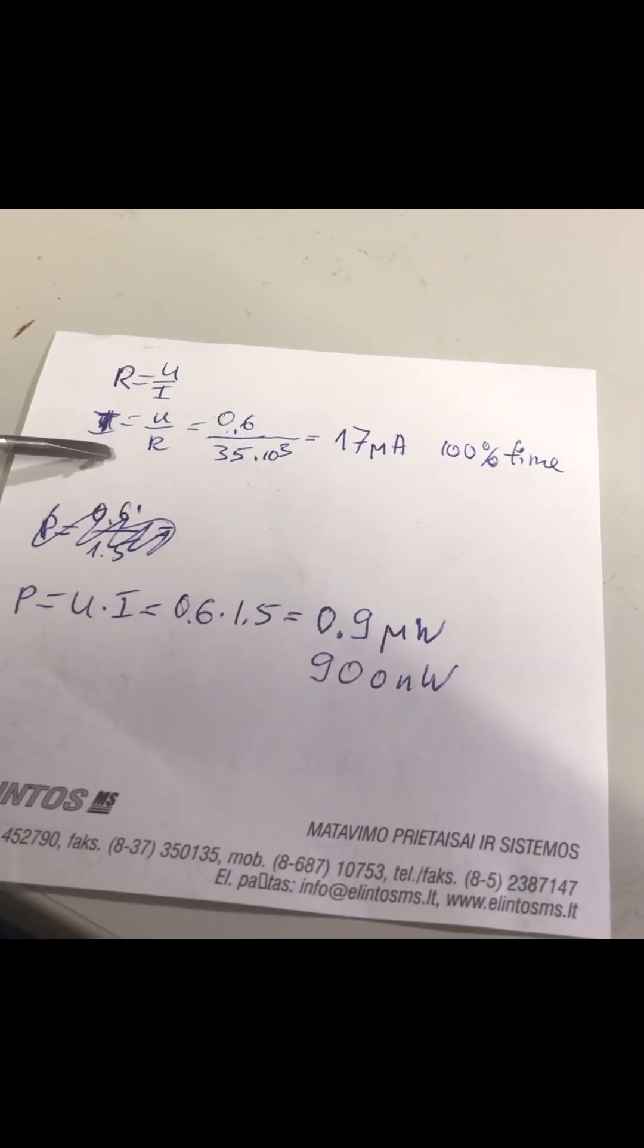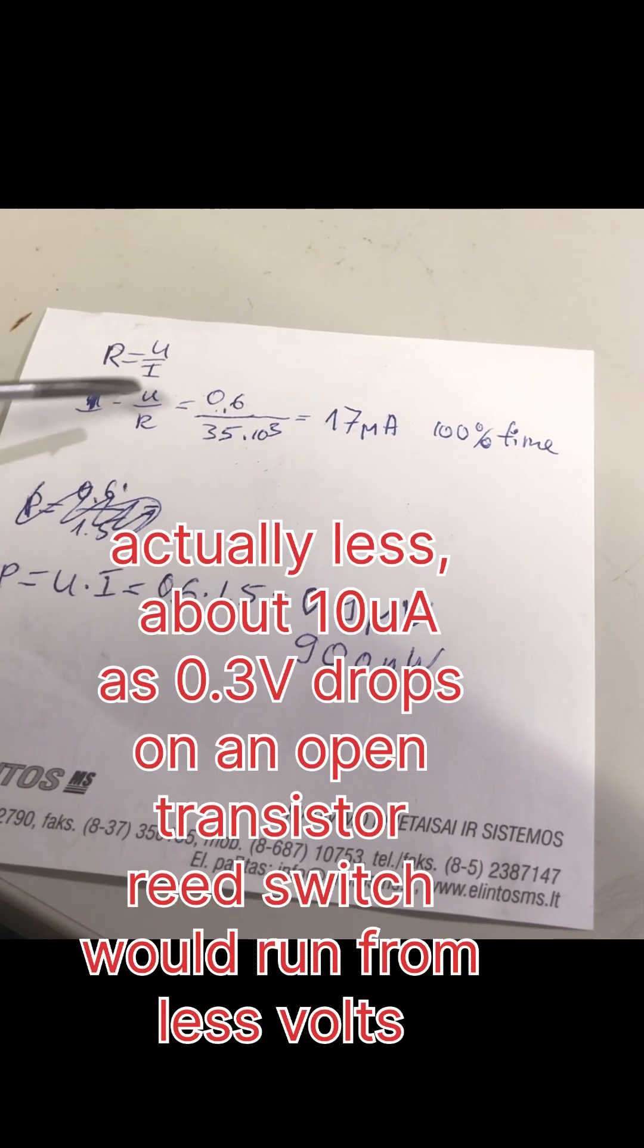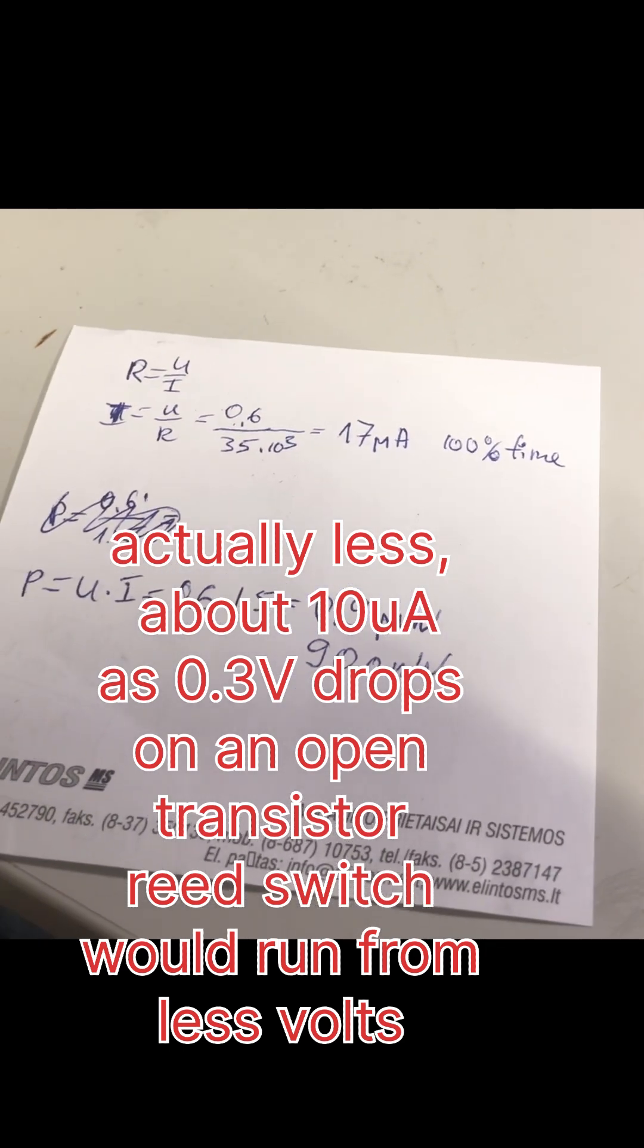If the coil were energized full 100 percent of time we would get 0.6 volts divided by 35 kilo ohms, 17 micro amps of current.